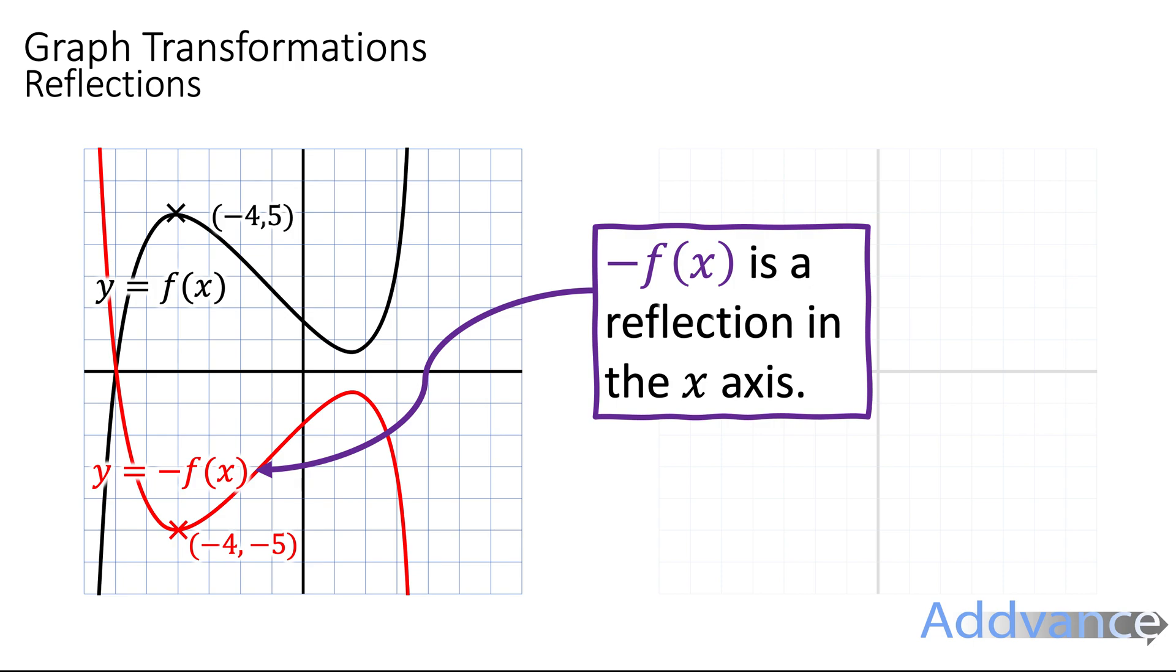Okay? The y coordinate swap sign. So if the y coordinate was five, it becomes minus five. If it was negative, now it becomes positive.